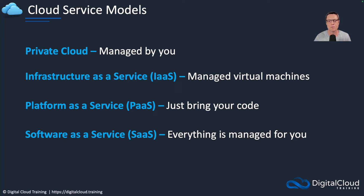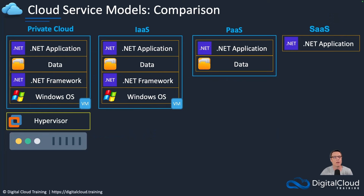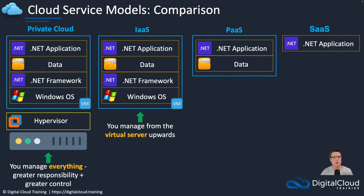Looking at these side by side: on the left you've got the private cloud, where you have to manage everything. With Infrastructure as a Service, the server layer — including all associated storage, networking, and the hypervisor — are managed for you, so you have virtual machines, or instances as we call them in the cloud, sitting on top. What you have to manage with IaaS is the operating system (Windows or Linux), software updates, any application frameworks you're using, your data, and your application itself.